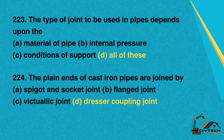Question 223: The type of joint to be used in pipes depends upon the. A. Material of pipe. B. Internal pressure. C. Conditions of support. D. All of these. Correct option: D. All of these.